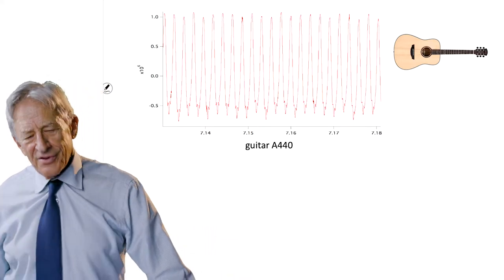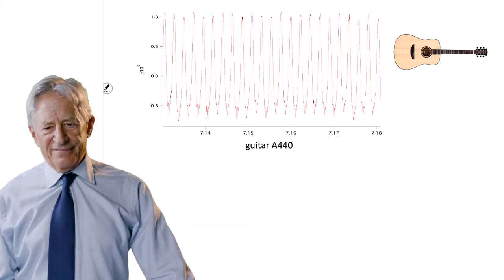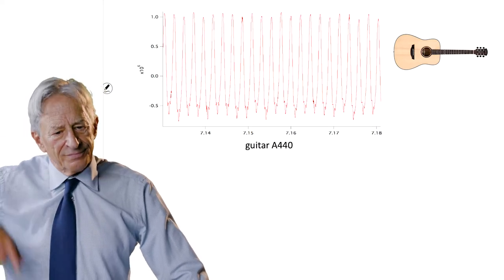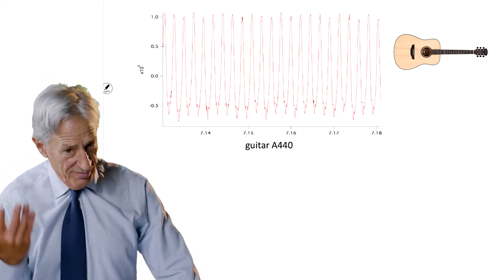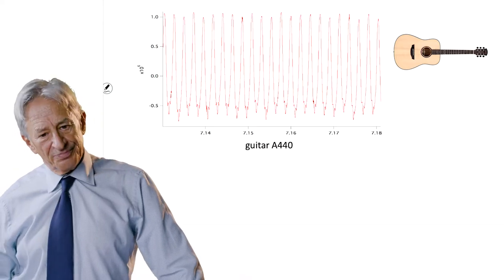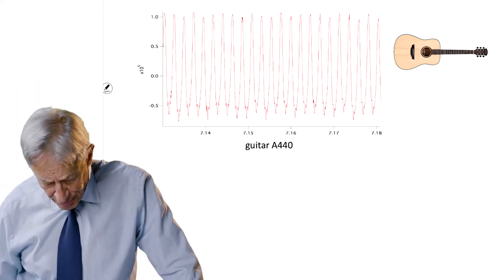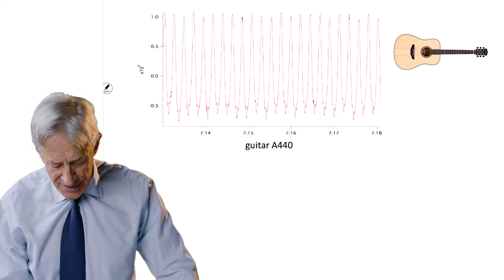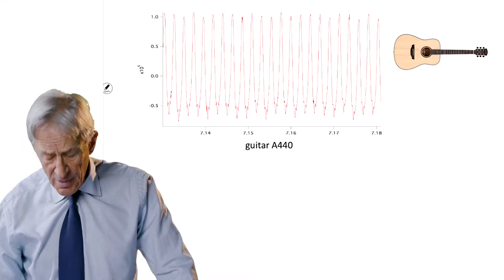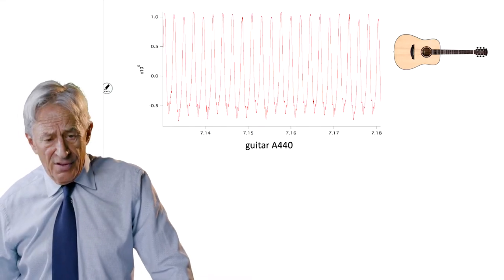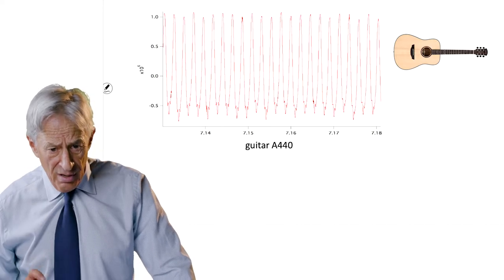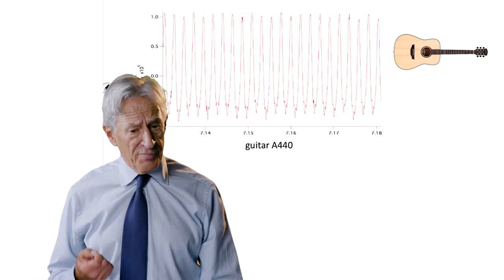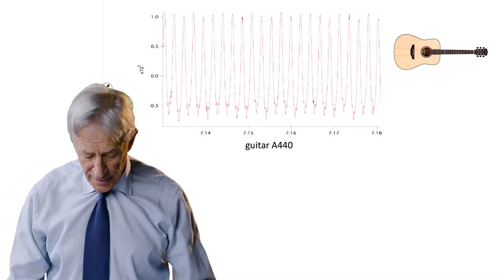What is a musical instrument? A musical instrument is a physical device for producing an oscillation, and that oscillation is the musical note. Here is an actual record — a very short record, measured in seconds — of a guitar playing the A chord at 440 cycles per second.